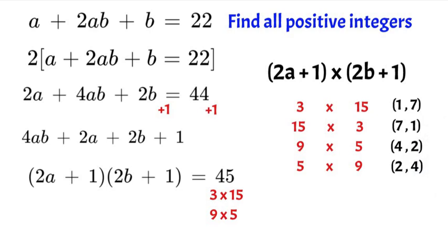So therefore our a and b values are all the same. We have 1, 2, 4, and 7. And that would be the final answer. Thanks for watching. If you have any other questions please comment down below.